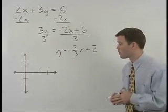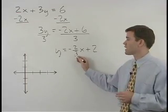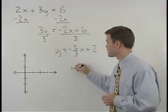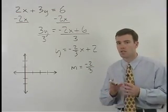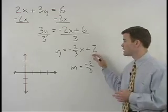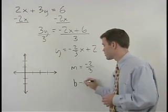Its slope, or m, remember, is the coefficient of the x term, which in this case is negative 2 thirds. Its y-intercept, or b, is the constant term, which in this case is 2.